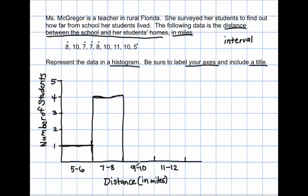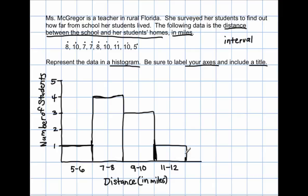Next, 9 through 10. I count 1, 2, 3 — so 3 students live between 9 and 10 miles from school. And the last interval, 11 through 12 — there's 1 student who lives 11 to 12 miles away from school.